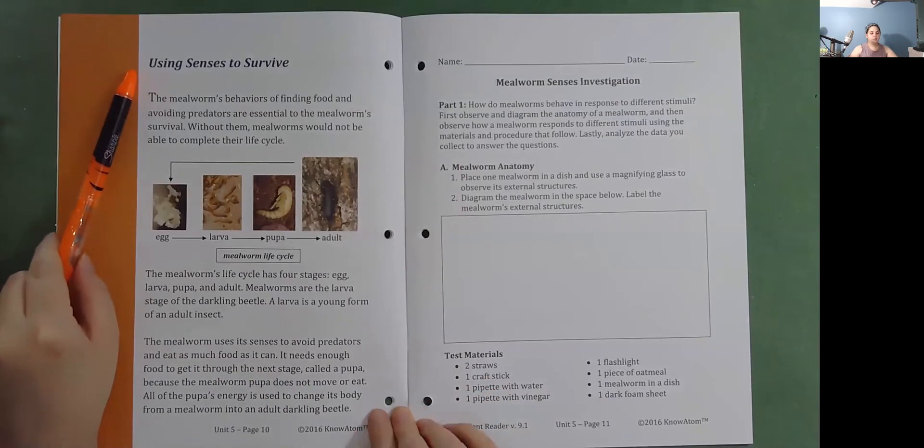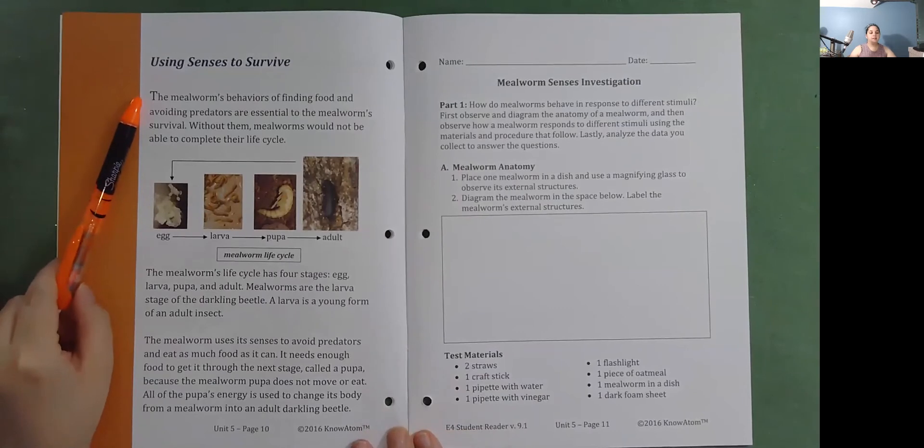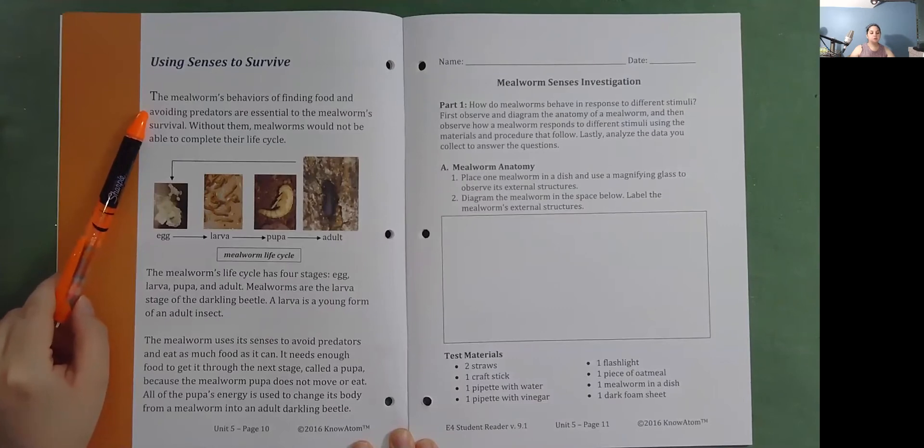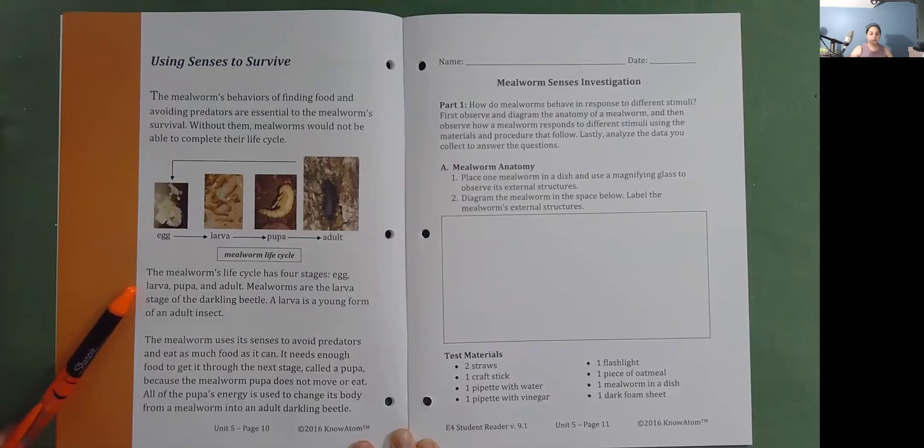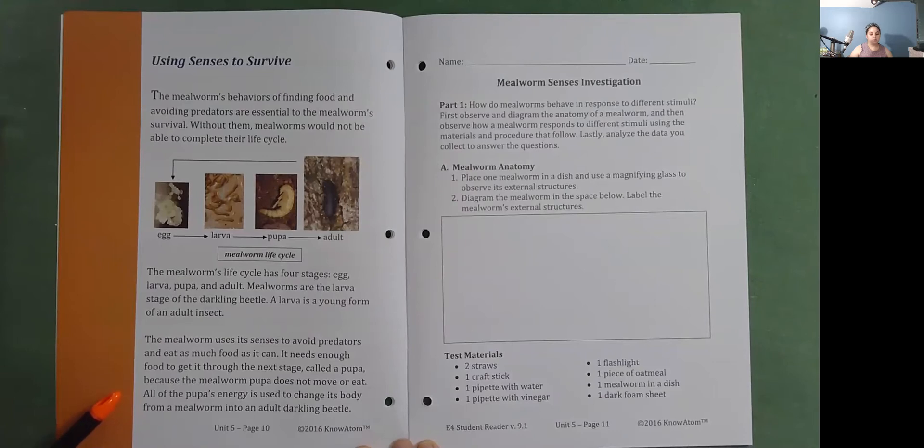Using senses to survive. The mealworm's behaviors of finding food and avoiding predators are essential to the mealworm's survival. Without them, mealworms would not be able to complete their life cycle. The mealworm's life cycle has four stages: egg, larva, pupa, and adult. Mealworms are the larva stage of the darkling beetle. A larva is a young form of an adult insect. The mealworm uses its senses to avoid predators and eat as much food as it can. It needs enough food to get it through the next stage called a pupa because the mealworm pupa does not move or eat.